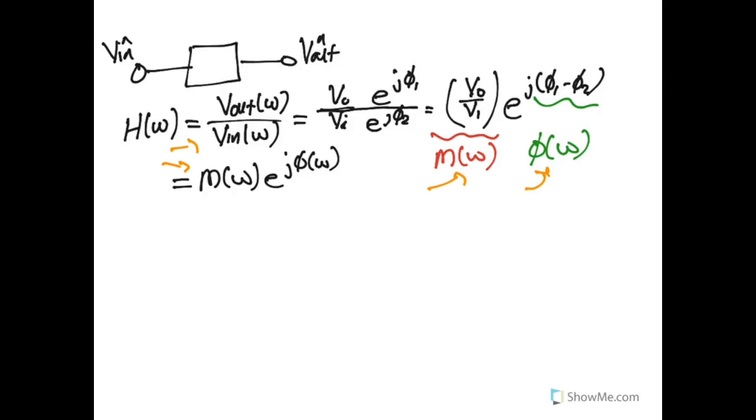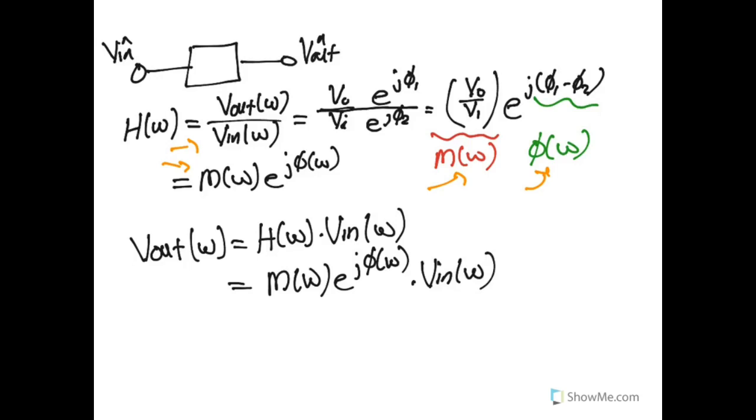Combining our definition of the transfer function with our relationship between the input and the output, we can start to get a better understanding of how this affects the output. The output function is equal to our input function times the transfer function. This is just copying in the definitions of our transfer function and our input function. Overall, what you get out of a circuit is equal to your input signal times however the transfer function modifies the magnitude of the signal and however the transfer function modifies the phase of the signal.